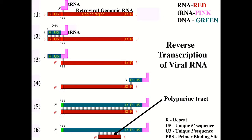In step three, you see a second enzymatic activity of reverse transcriptase: the RNase H activity. Reverse transcriptase degrades that portion of the RNA chromosome of HIV which just served as the template to make the DNA copy of the repeat and U5. That part of the RNA genome is now gone. This is important because it leaves the repeat sequence in DNA form, with complete perfect homology with the RNA repeat at the 3' end of the genome.